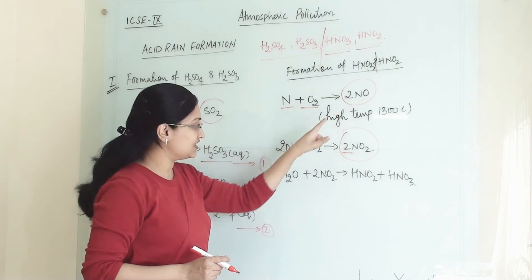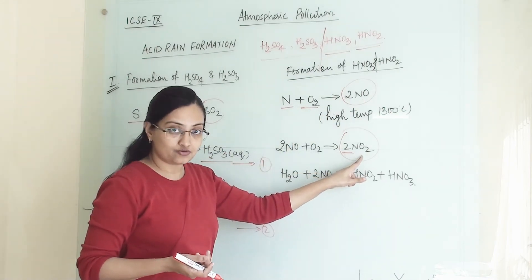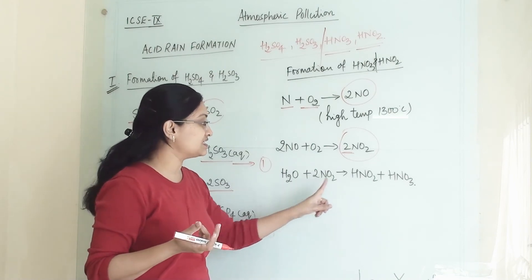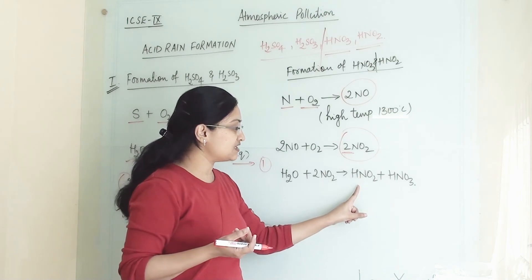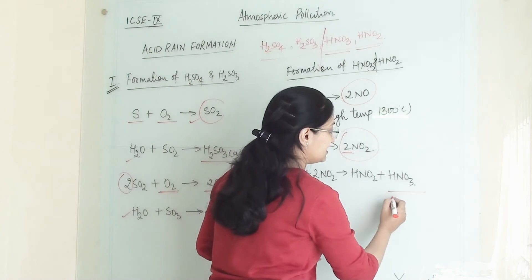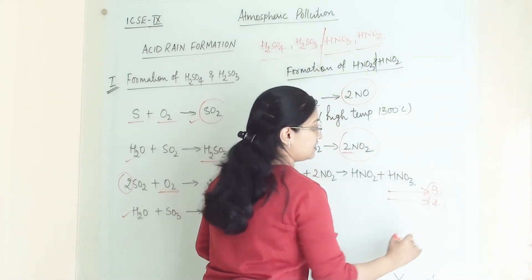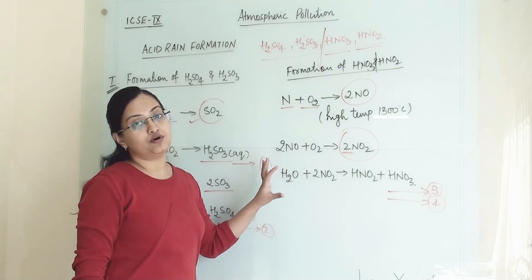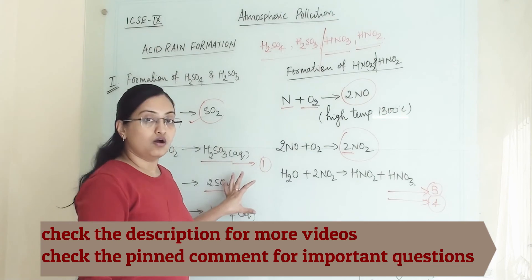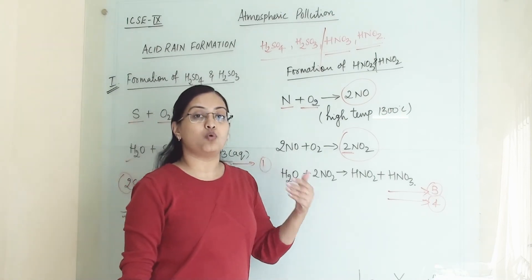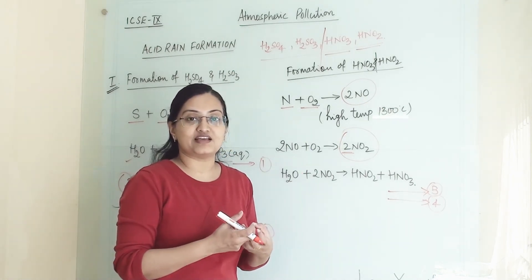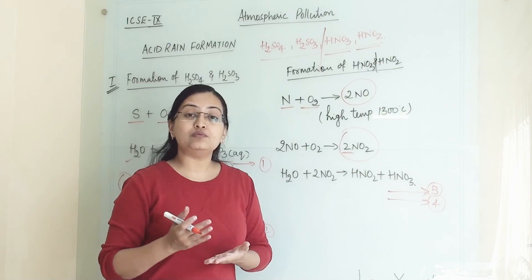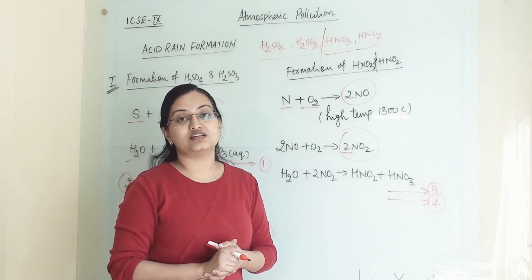After nitric oxide is further oxidized into nitrogen dioxide, when this nitrogen dioxide comes into contact with water mist or water droplets, it gives us both acids — nitrous acid (HNO₂) and nitric acid (HNO₃). This is how we get traces of both acids along with water. When all four acids mix with rainwater, they give the rainwater acidic properties. The pH of rainwater drops below 5.6, and that rainwater is termed acid rain.